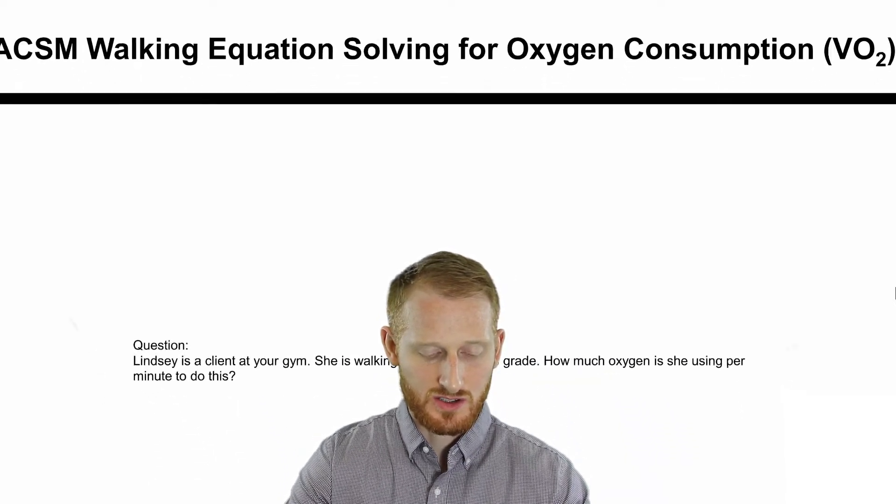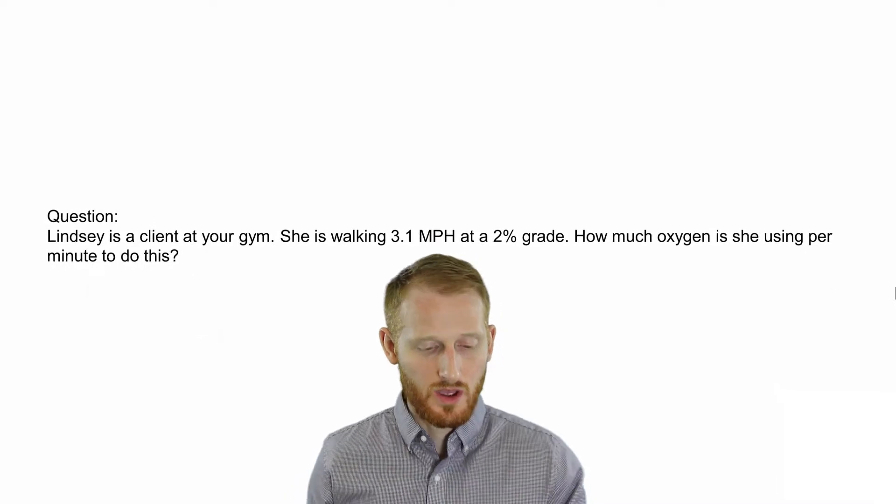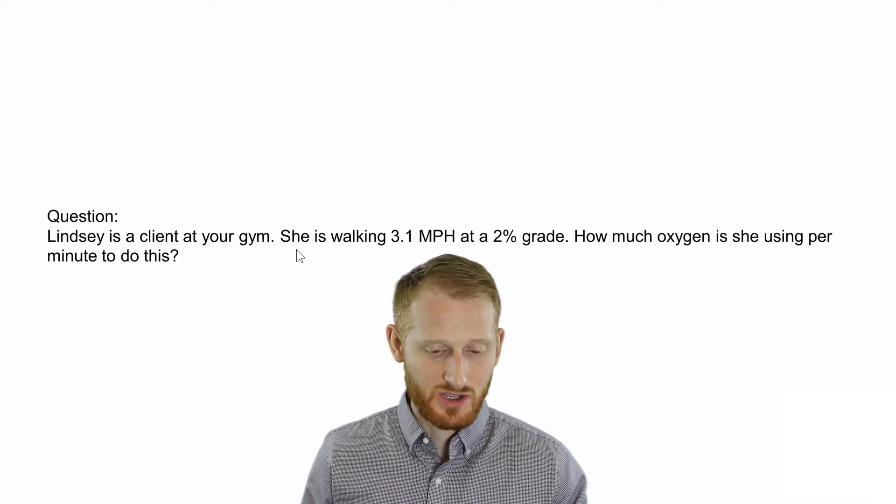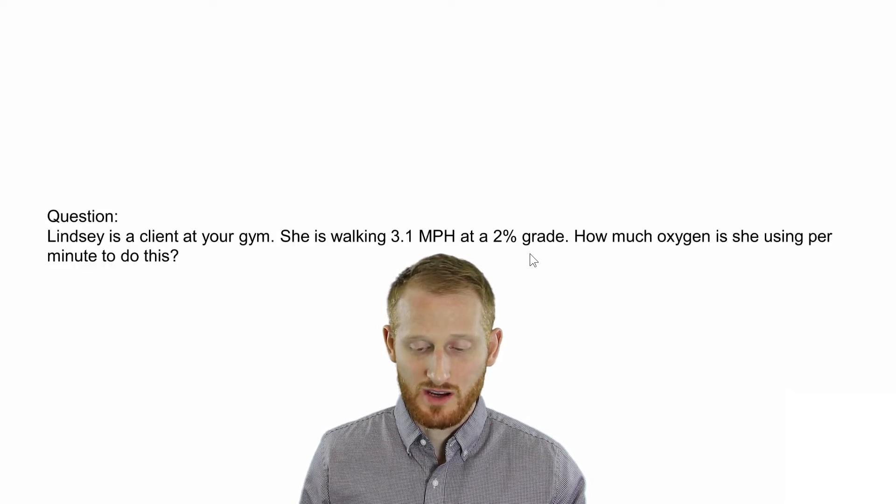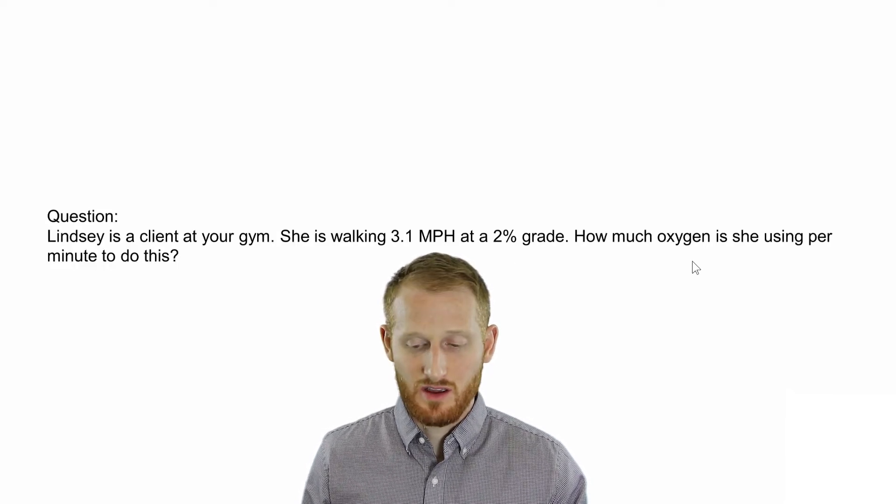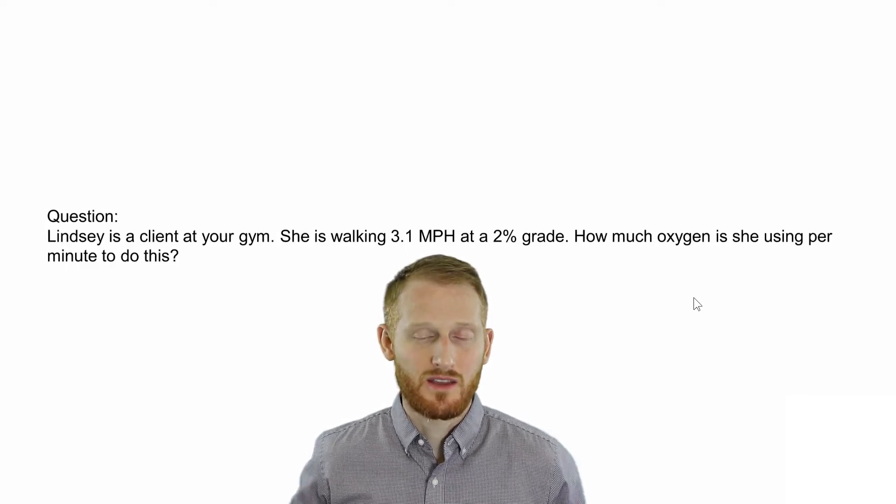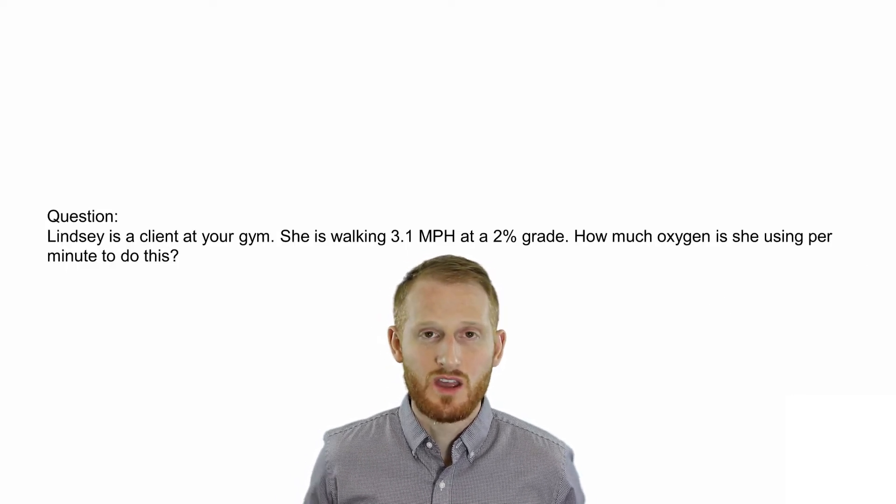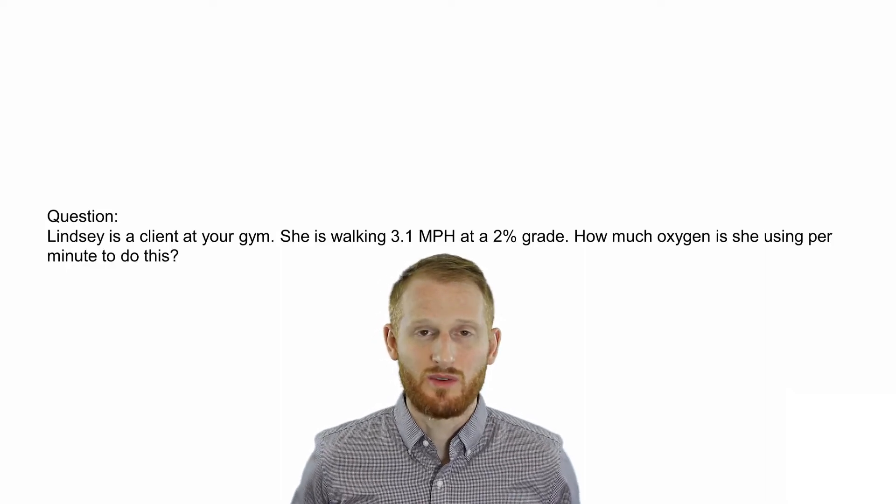Let's use a question to help us frame this conversation. Lindsay is a client at your gym. She's walking 3.1 miles per hour at a 2% grade. How much oxygen is she consuming per minute to do this? We're going to be calculating her relative VO2 relative to total body mass, which is milliliters of oxygen per kilogram of body mass per minute.